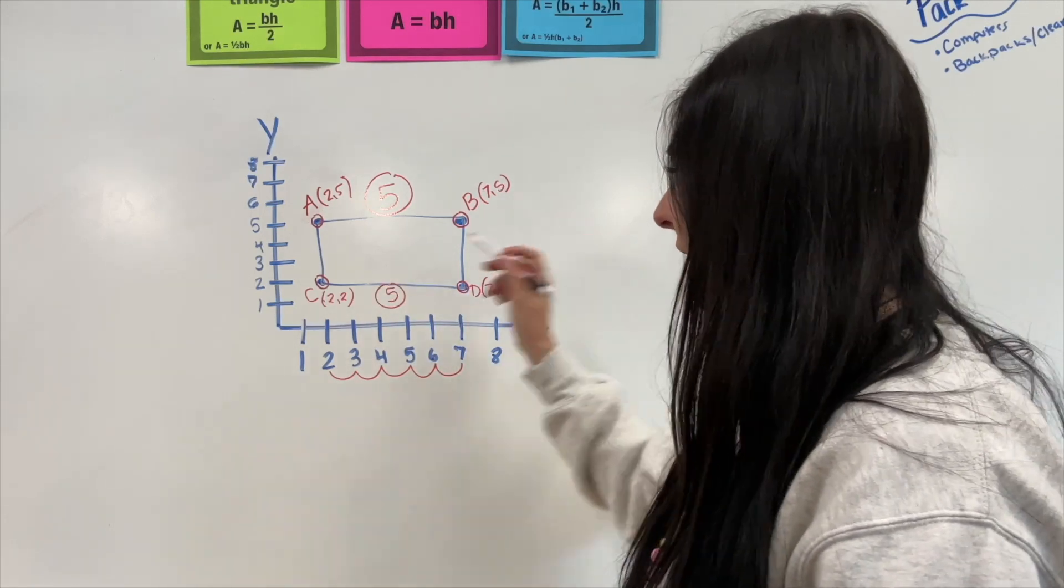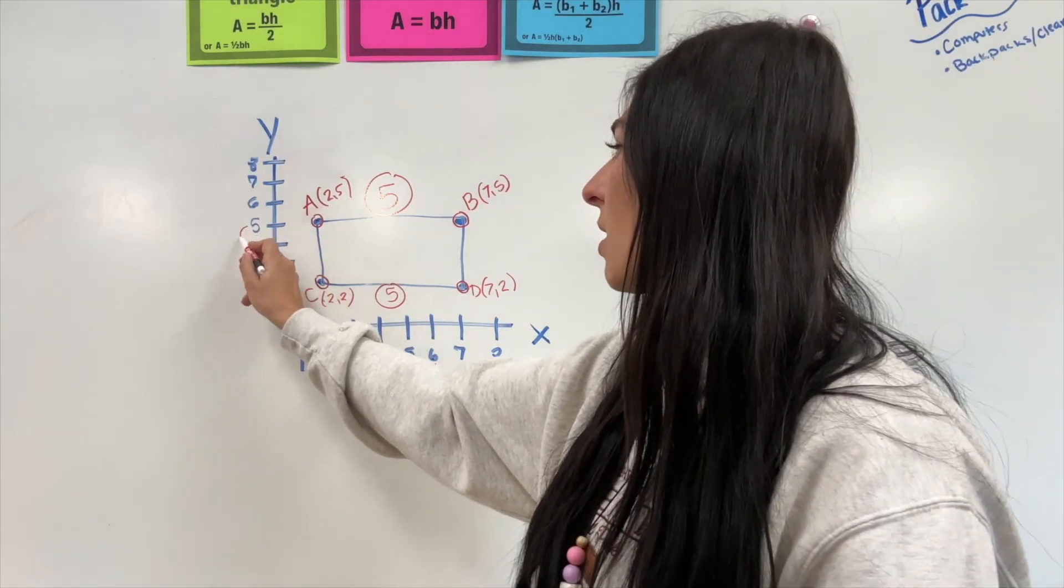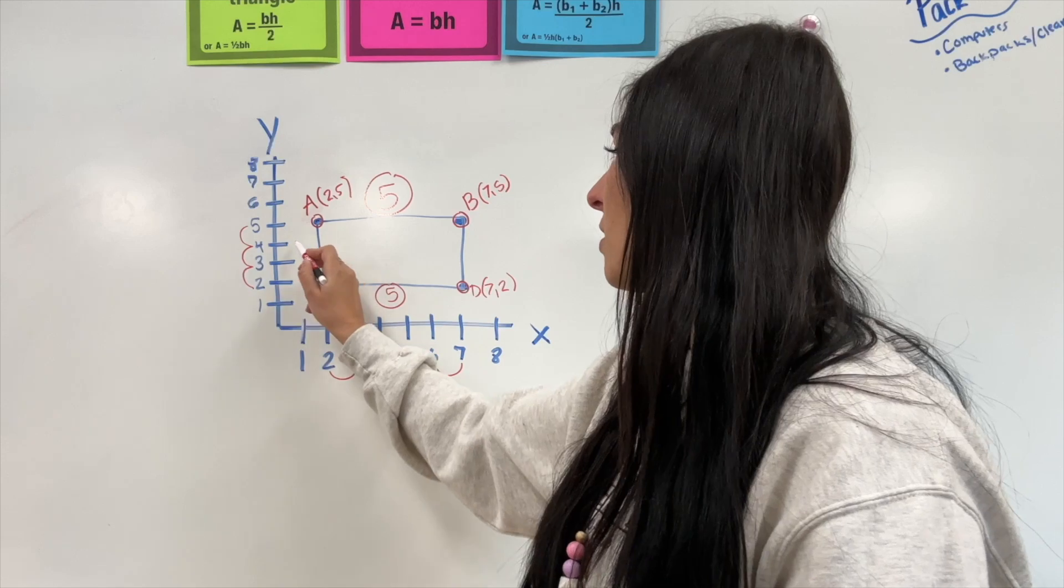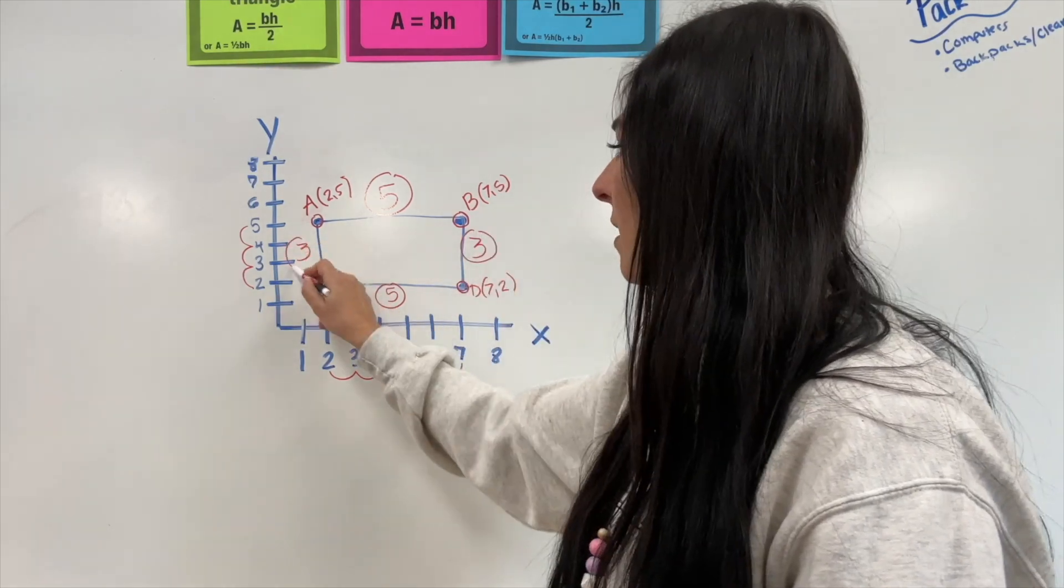Now, on this side, we start at 5, we go down to 2, or vice versa. So, let's jump down 1, 2, 3. So, my lengths should be 3.